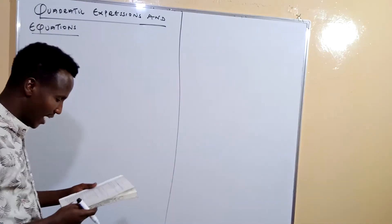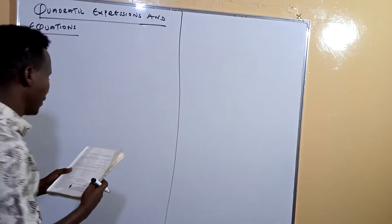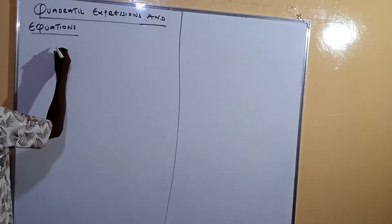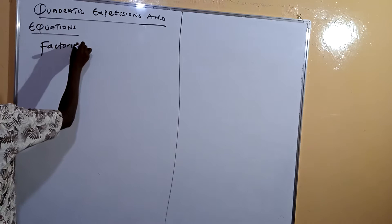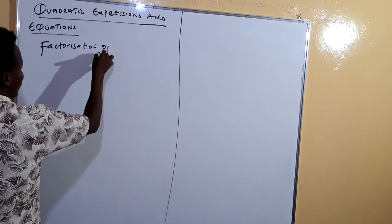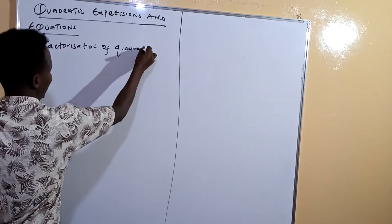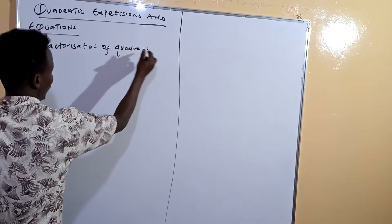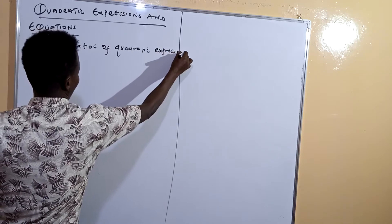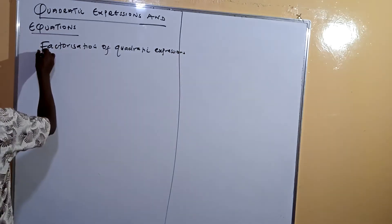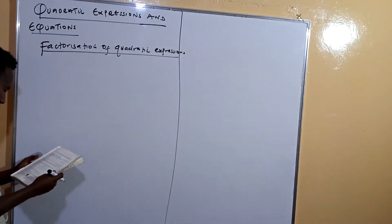Today's class is Form 3, first chapter — quadratic expressions and equations. It is very easy. We are going to start with what is called factorization of quadratic expressions, because it is very very useful.